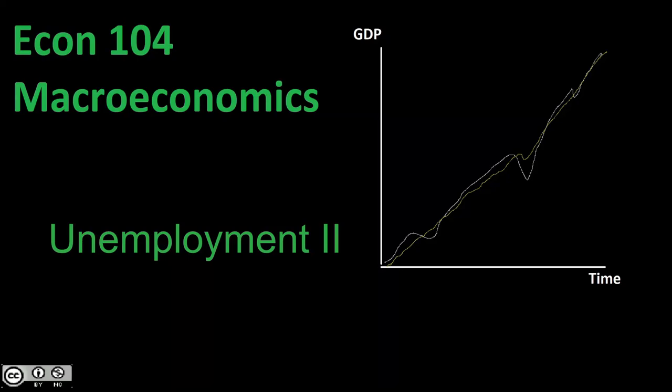Welcome back to Econ 104, Introduction to Macroeconomics. Here we're in our second video looking at unemployment. What we're going to get into in this video, specifically, is taking a look at determinants — things that are going to affect our unemployment rate in the short run versus long-run fluctuations in unemployment rate.